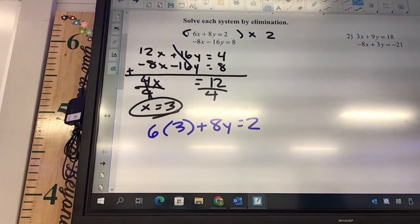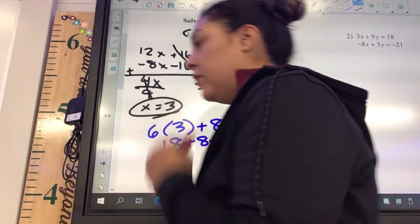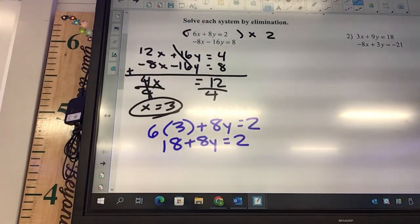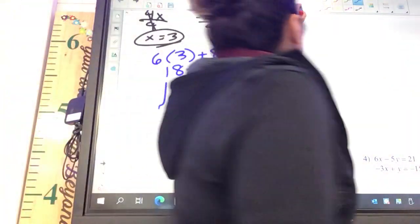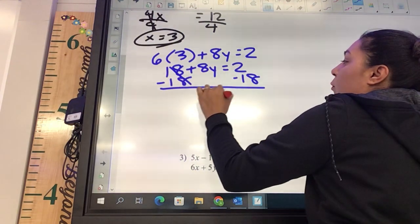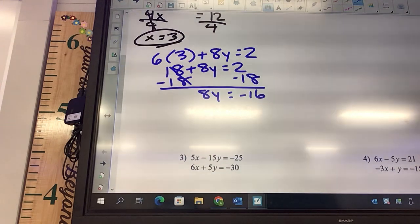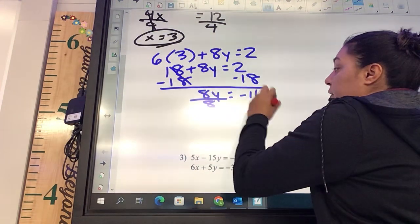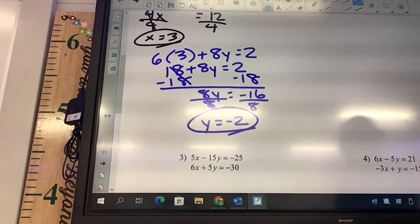Okay, so 6 times 3, 18 plus 8y equals 2. Okay, and then we're going to say minus 18. Minus 18. So we got 8y equals negative 16. Okay, and then what? Divide. Divide, and what is my y going to be? 2. Try again. Negative 2. Negative 2. What is my solution? 3 comma negative 2. 3 comma negative 2.